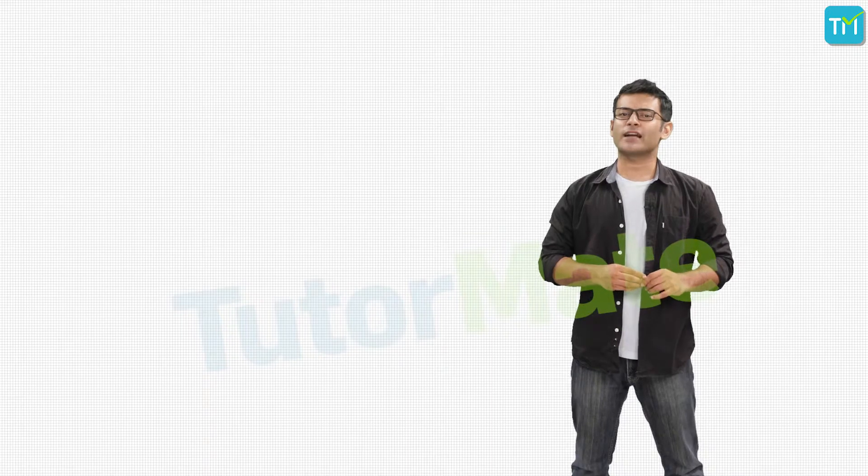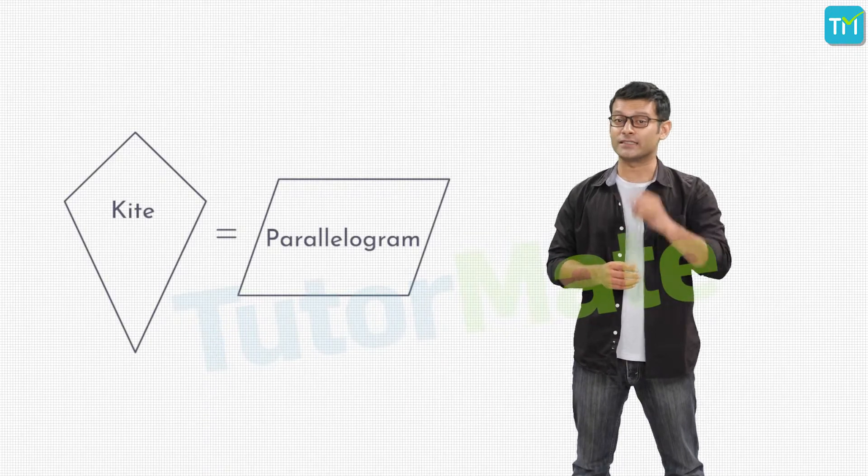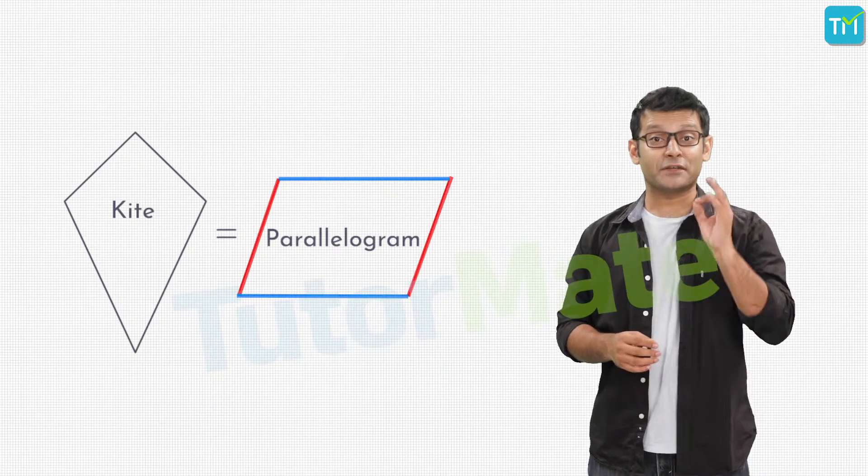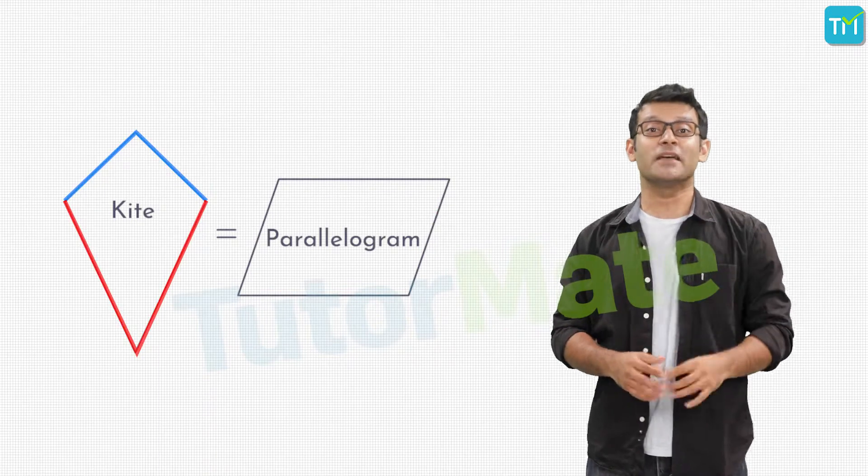Do you think we can call a kite to be a parallelogram? The answer is no, we can't. Why? Because its opposite sides are neither parallel nor equal. Only its adjacent sides are equal.